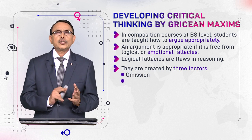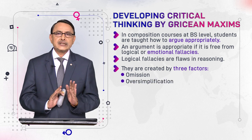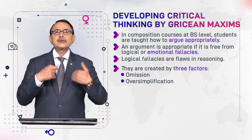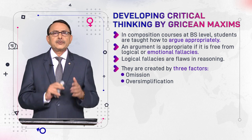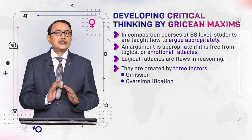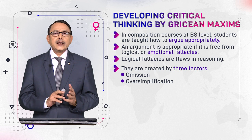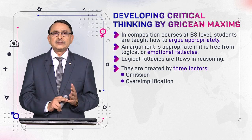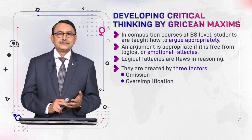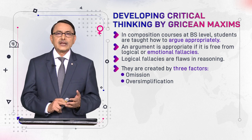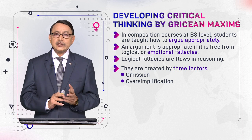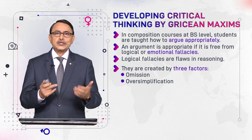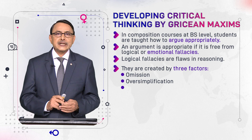With omission, you don't provide complete information. Number two is oversimplification. The process is very complex but you try to make it simple. What do you do here? You hide so many things — you hide things because you don't have evidence to support them. This also creates a flaw in your reasoning.